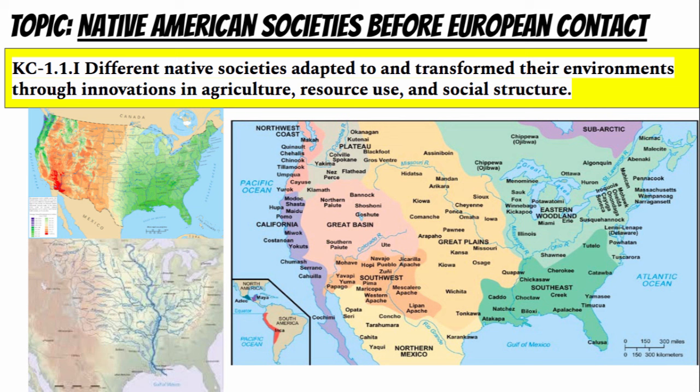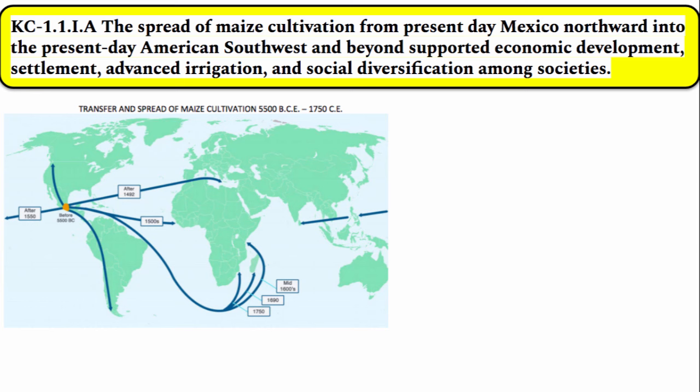As these bands of people spread across the continent, from areas as diverse as colder than a polar bear's toenails Alaska, to the hot and dry southwest, to areas with fertile soil and easily accessible water in the east, indigenous people not only transformed their environments, but the map right there reveals just some of the diverse cultures and ways of life that developed. The spread of maize cultivation from present-day Mexico northward into the present-day American Southwest and beyond supported economic development, settlement, advanced irrigation, and social diversification among societies.